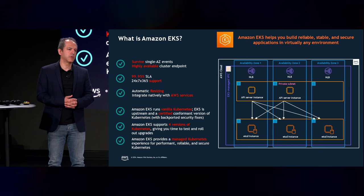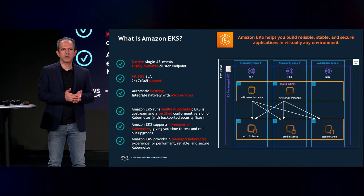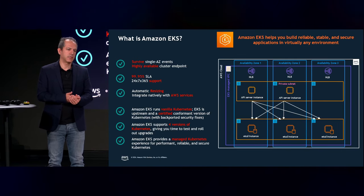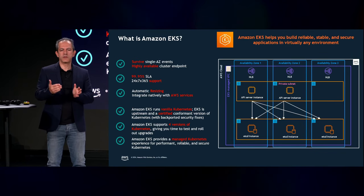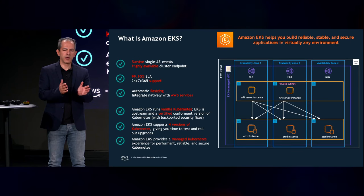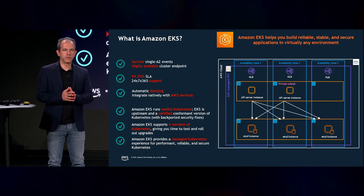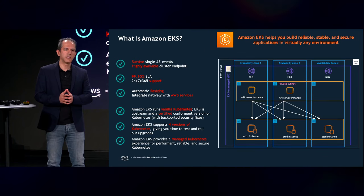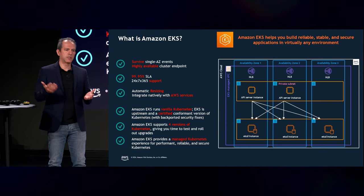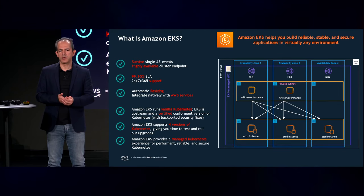Amazon EKS — Elastic Kubernetes Service — automatically scales all control plane services up and down depending on how much pressure you have on them. It places control plane services across different availability zones, which are physically independent portions of an AWS region. So if one goes offline, your Kubernetes cluster still runs. On top of that, we provide an SLA and 24/7 support.